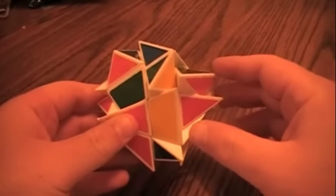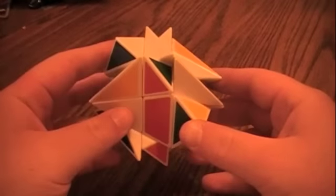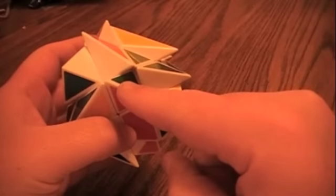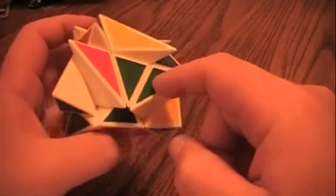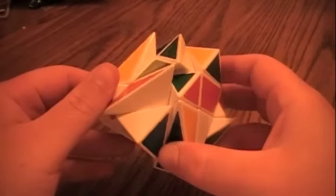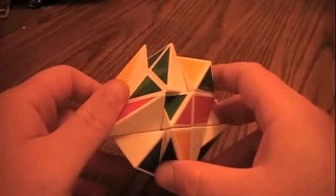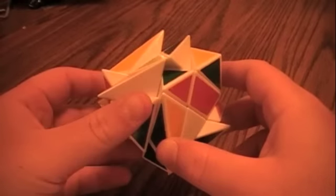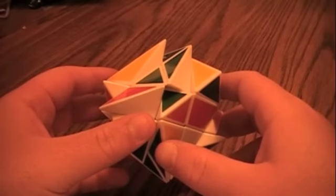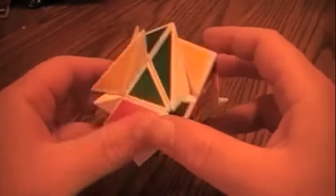Alright, so this is going to be a tutorial on how to solve the axis cube. Now the good thing about this shape-shifting 3x3 is that there's no parity, so that doesn't make its difficulty as high as some other shape-shifting puzzles. I would rate this as a medium difficulty shape-shifting puzzle. It's not easy, it's not hard, it's in the middle, and it all comes down to the last layer.